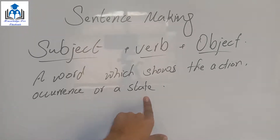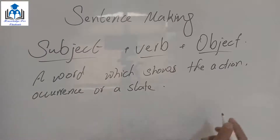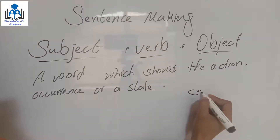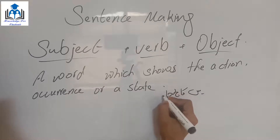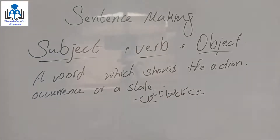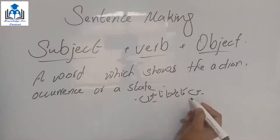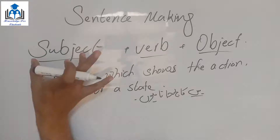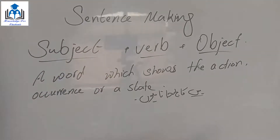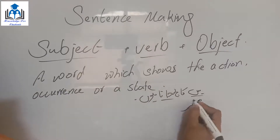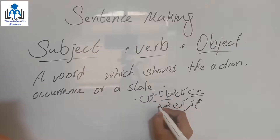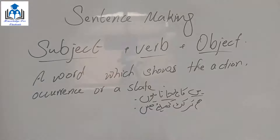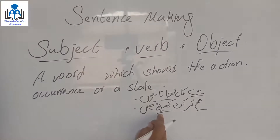For example: 'مैं college जाता हूँ' — the one who does the action is 'मैं' (I), so 'मैं' is the subject. But what do I do? 'जाता हूँ' (go) — so 'जाता हूँ' is the verb here. Same: 'हम cricket खेलते हैं' — who does it? 'हम' (we) = subject. What do we do? 'खेलते' (play) = verb.